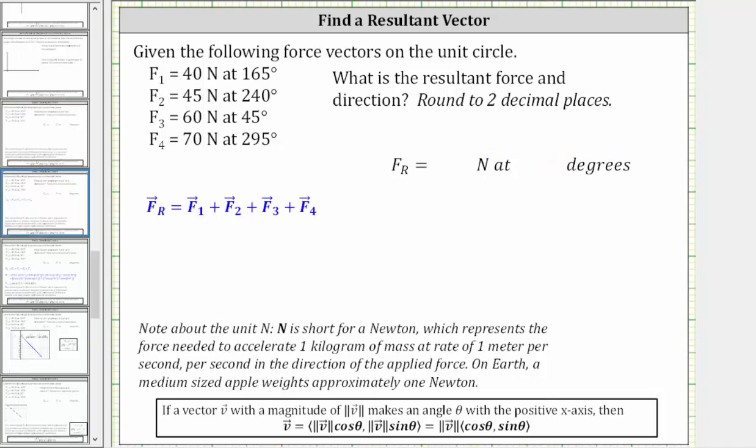So again, the first step is to find the sum of the four force vectors. To do this, notice how the force in newtons would be the magnitude and the angle is the direction, which means you can write each of the vectors in component form. Since if a vector makes an angle theta with the positive x-axis, then the x component is equal to the magnitude of vector v times cosine theta, and the y component is equal to the magnitude of v times sine theta.